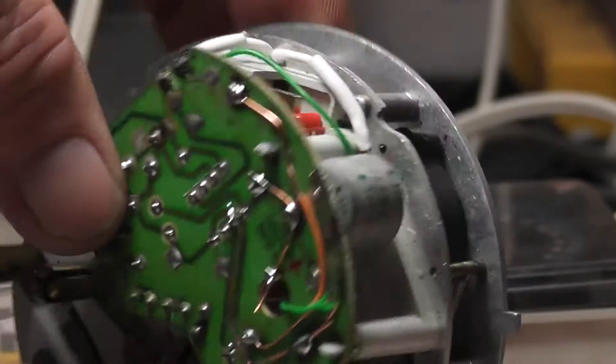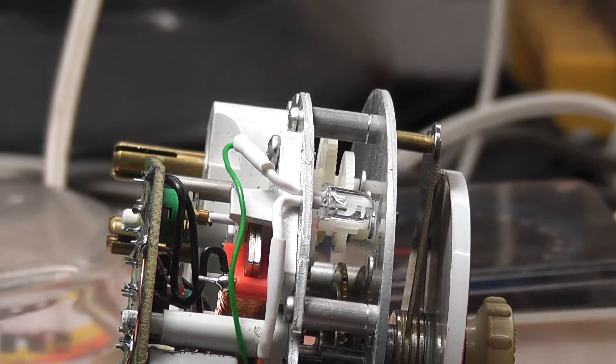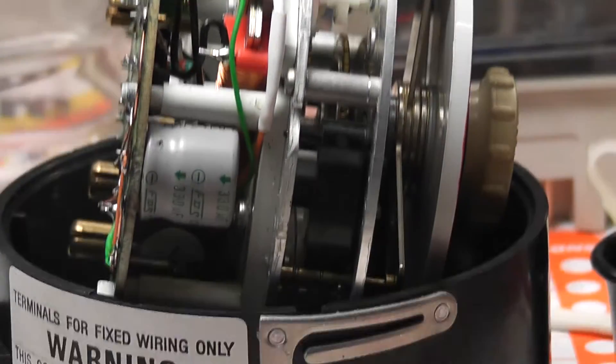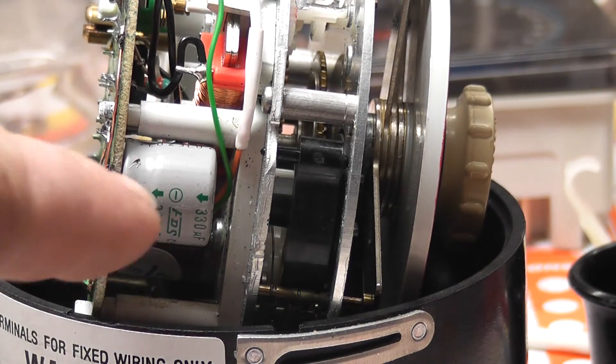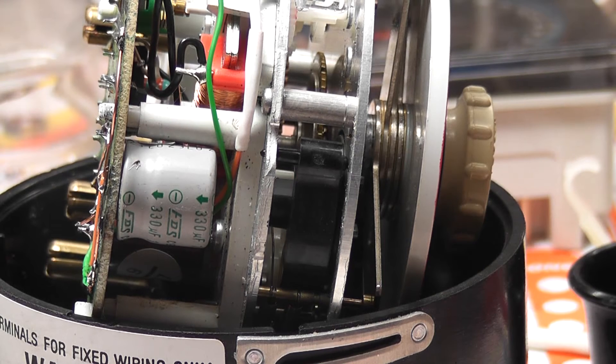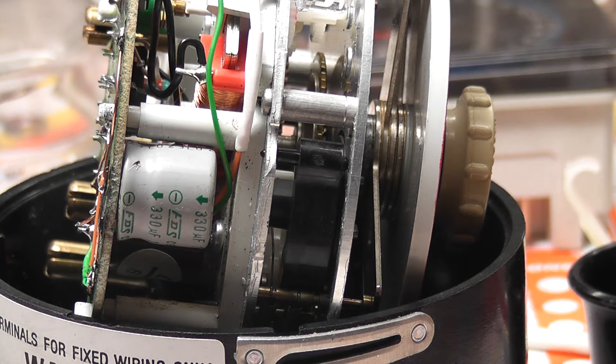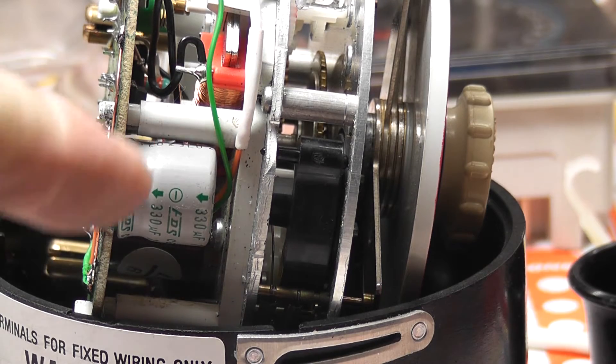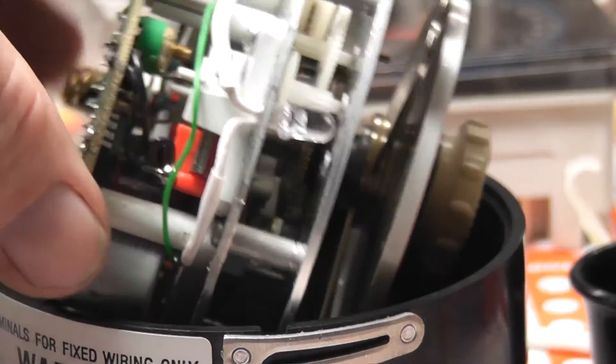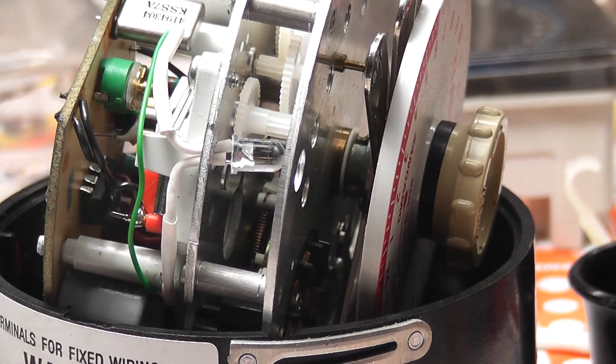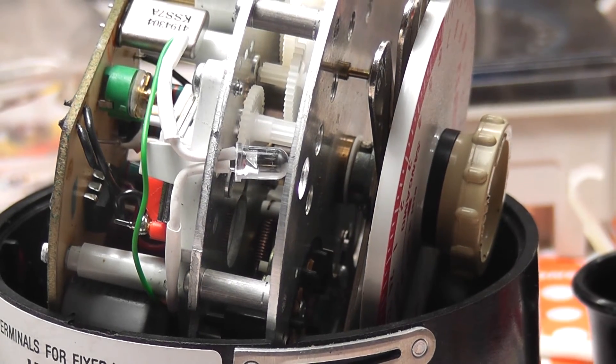Then turn it around. I fitted a 3,300 microfarad capacitor instead of the battery which acts like a buffer. And across the positive and the negative I fitted the LED which sits here. It sits on an angle. I have to glue it into place. And that will be the pulse hole.